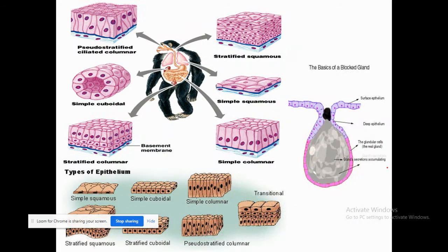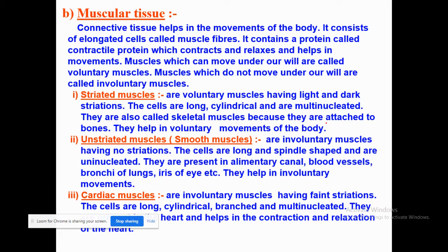Here is the diagram slide showing squamous epithelial — thin flat cells — columnar epithelial — column-like or pillar-like cells — and glandular epithelial, where a gland is present on the surface. Now, muscular tissue helps in movement in our body. It consists of elongated cells known as muscle fibers and contains a contractile protein which contracts and relaxes, helping in our movements.